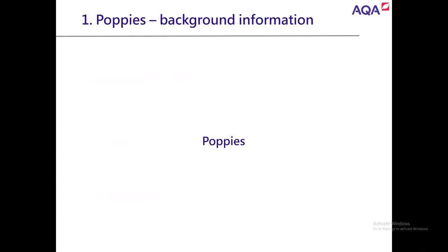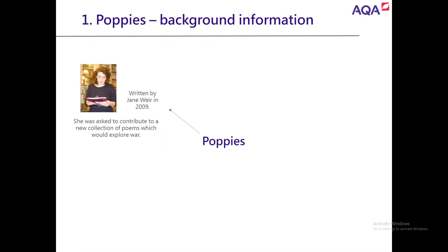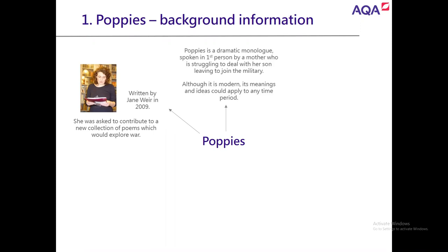Poppies was written in 2009 by Jane Weir. She was asked to contribute to a new collection of poems that would explore war. Poppies is a dramatic monologue, meaning it's spoken in first person by a mother who is struggling to deal with her son leaving to join the military. Just to be clear, that isn't Jane Weir herself — she was writing as a character, a made-up mother who isn't real, but who could represent any mother at any time.